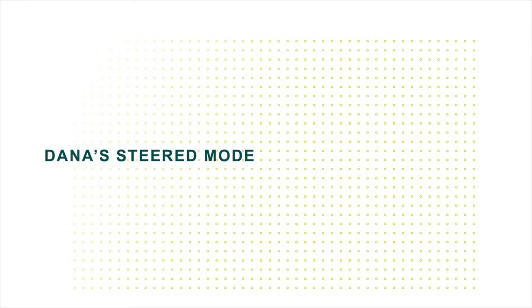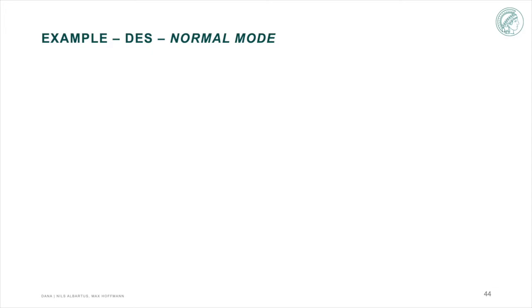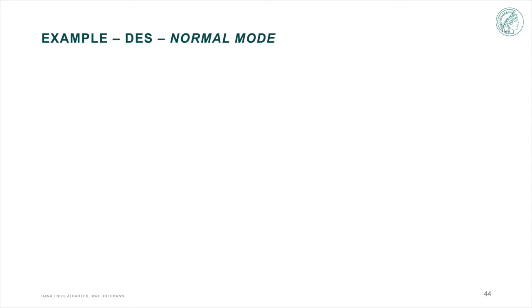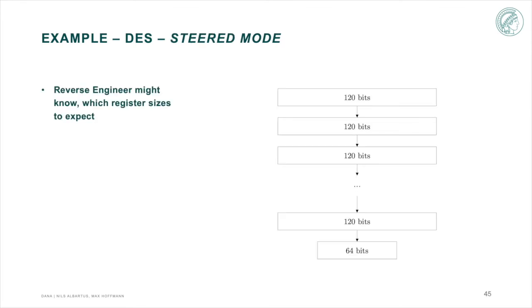Let's talk a little bit more about the steered mode, which is a very powerful feature of DANA. In this example, we analyzed a completely unrolled DES core with the help of DANA. DANA groups the 56-bit key register and the two 32-bit halves of the state register into a 120-bit register. Of course, this is not wrong since all 16 round registers are correctly identified, but this might not be what a reverse engineer expects to find when analyzing a DES core.